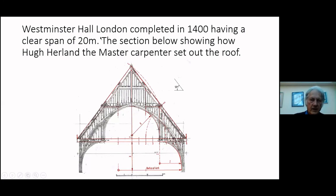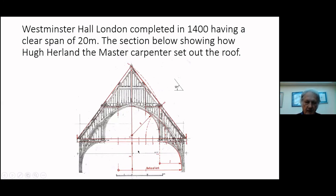Westminster Hall is also very clearly set out using this method — even the radii of the arcs and the positions for the collars, and obviously the length of the rafters — again 52 degrees.